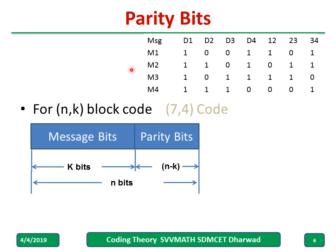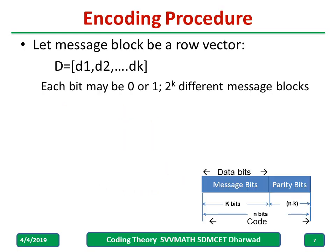In general, we represent: message bits followed by parity bits. Message bits are k in number, total bits are n, so parity bits are n minus k. You can see the previous example: total number of bits are seven, four are data bits, three are parity bits. Let the message block be a row vector d1, d2, d3 up to dk. Each bit may be 0 or 1. How many combinations? 2 raised to k — if there are 3 bits d1 d2 d3, we get 2^3 = 8 combinations, and in general 2^k.